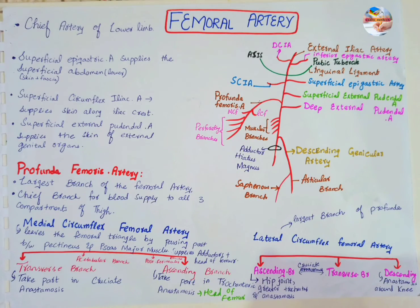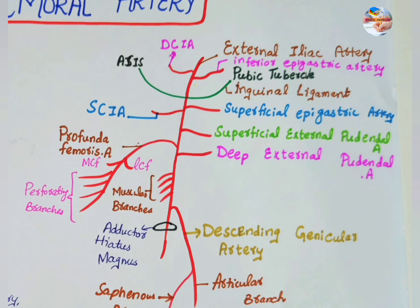The femoral artery is the chief artery of the lower limb and is the continuation of the external iliac artery. It begins behind the inguinal ligament at the mid-inguinal point and passes downwards and medially, first in the femoral triangle and then in the adductor canal.